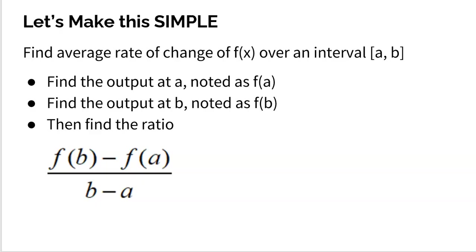To find the average rate of change of a function over a closed interval a to b, all you have to do is find the output of a, noted as f of a — plug a in, get the output. Find the output at b, noted as f of b — plug b in, get the output. Then you find the ratio of the difference in the outputs divided by the difference in the inputs. That sounds like slope from back in seventh or eighth grade. It's exactly what it is — you simply find the slope between the beginning and the end. Subtract your outputs on top, subtract your inputs in the denominator. Pretty simple.